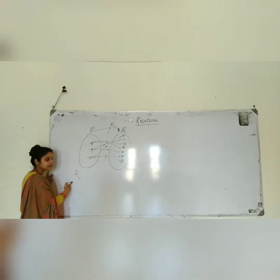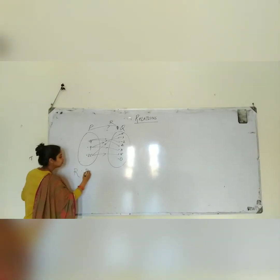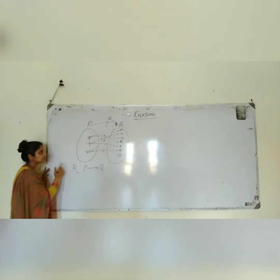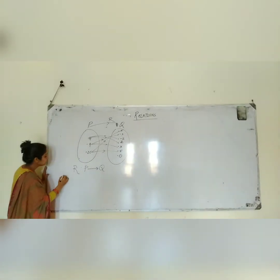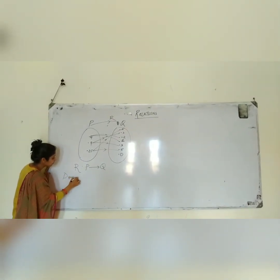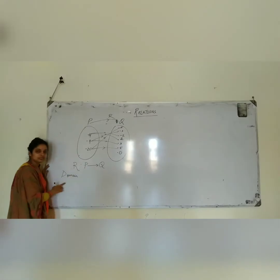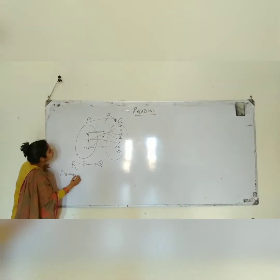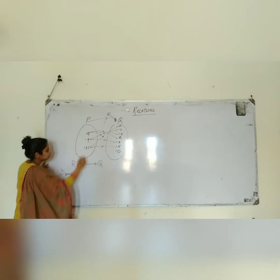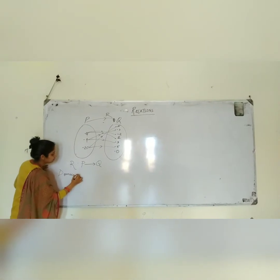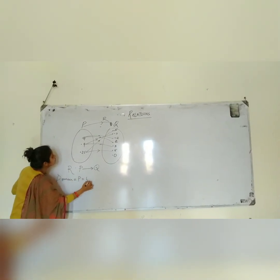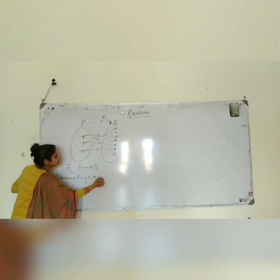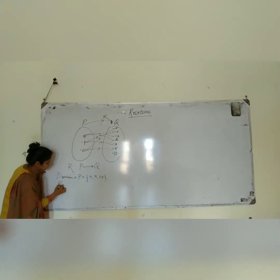R is the relation from P to Q. Now what is the domain of this set? The domain is set P itself — that is 4, 9, and 25.